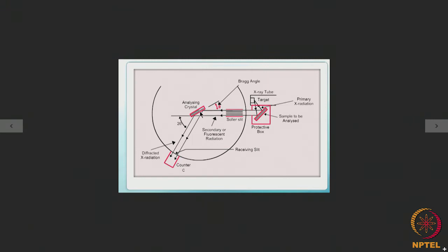If the analyzing crystal moves by an angle θ, the counter moves by an angle 2θ. Whichever fluorescent or secondary X-ray wavelengths satisfy Bragg's law will be diffracted and recorded by the counter. Normally, sodium chloride or lithium fluoride crystals are used for analyzing purposes.